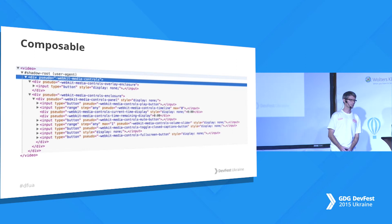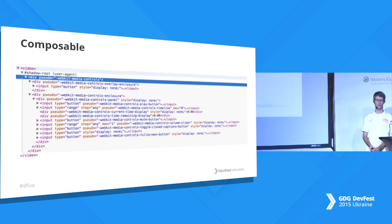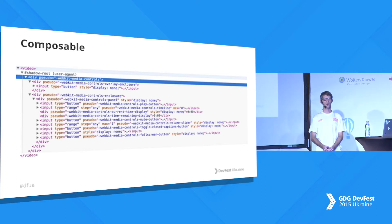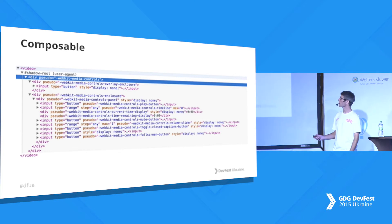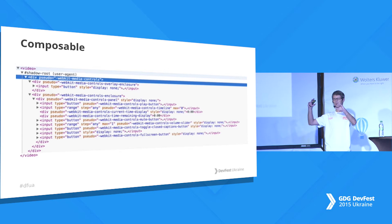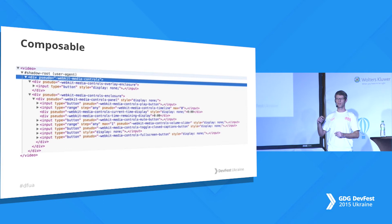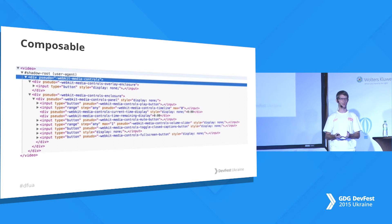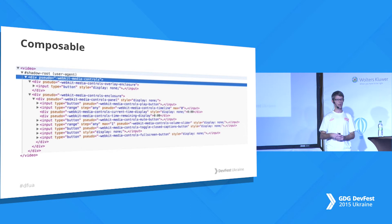Elements are also composable. This is the actual content of the video element — it's an HTML5 video element. If you enable Shadow DOM in your Chrome developer tools, you can see there are other elements — just simple divs. There's the actual video content, and underneath there's a menu bar with volume, pause, and so on. It's all encapsulated in one element with separate CSS. So you can use your own elements inside your elements — you can build your own form and use it with just one element tag in your page.